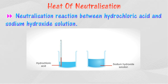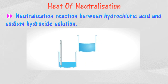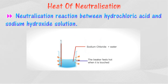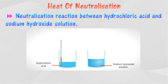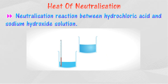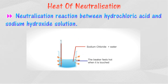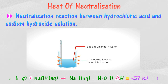When hydrochloric acid is quickly poured into a polystyrene cup containing sodium hydroxide solution, the container becomes hot and the thermometer registers a temperature increase. The neutralization reaction between acid and alkali is an exothermic reaction because the heat released causes the reaction temperature to increase.